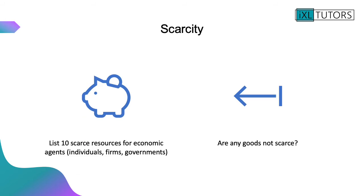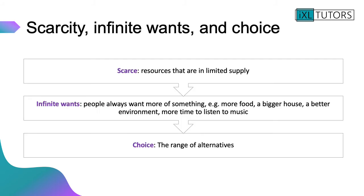Let's start with scarcity. Can you list 10 scarce resources for economic agents? Once you've done that, think about any goods that are not scarce. A scarce resource is a resource that is in limited supply — for example, fossil fuels. The other part of the economic problem is that economic agents have infinite wants: people always want more of something, such as more food, a bigger house, a better environment, or more time to listen to music.